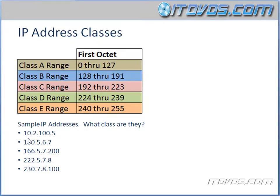For classes, we're concerned with the first octet. Class A is 0 through 127. For example, this number 10 is between 0 and 127, so this is a Class A address. Class B is 128 through 191. Class C is 192 through 223. Class D is 224 through 239. Class E is 240 through 255. Let's go through some IP addresses and look at what class they're in.